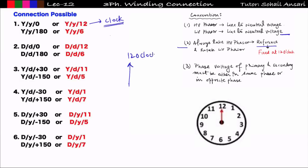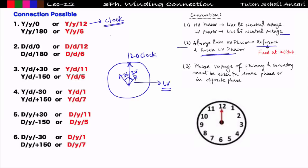Convention 2: always take the HV phasor as the reference. The minute hand (HV) is fixed at 12 o'clock and does not rotate. The hour hand (LV phasor) rotates in the clock to show leading or lagging. For example, if the hour hand lags the minute hand by 30 degrees, lv is lagging hv by 30 degrees.